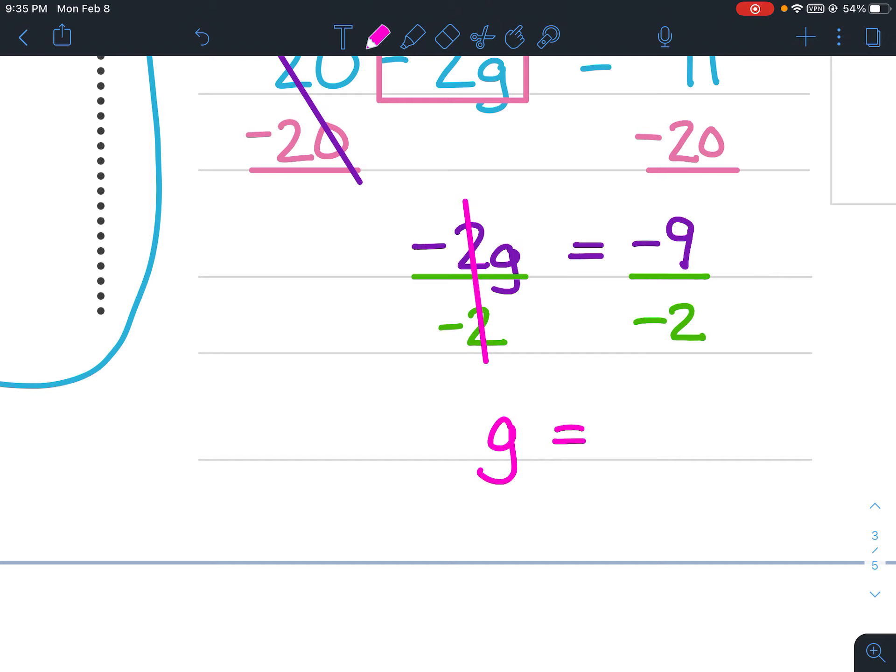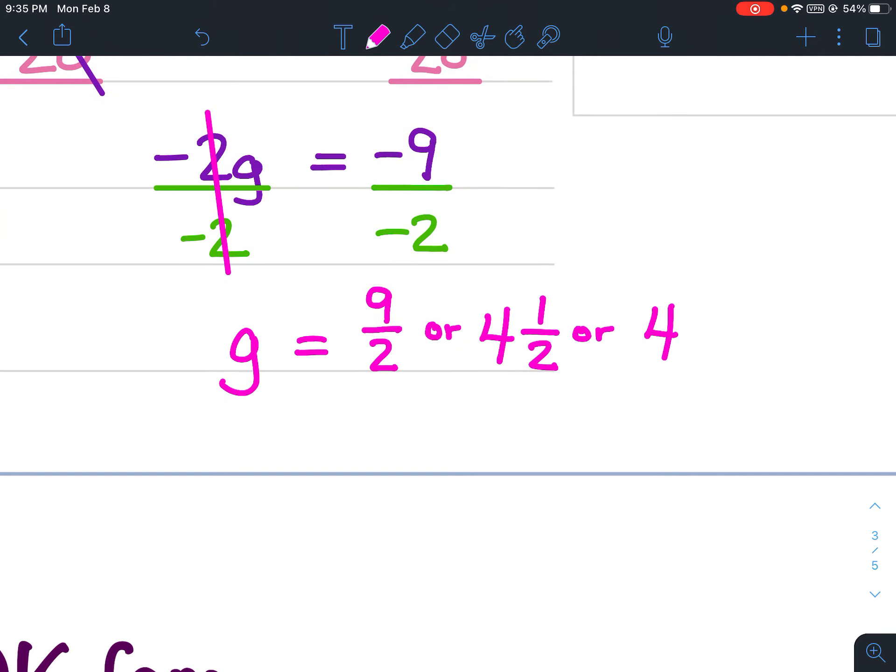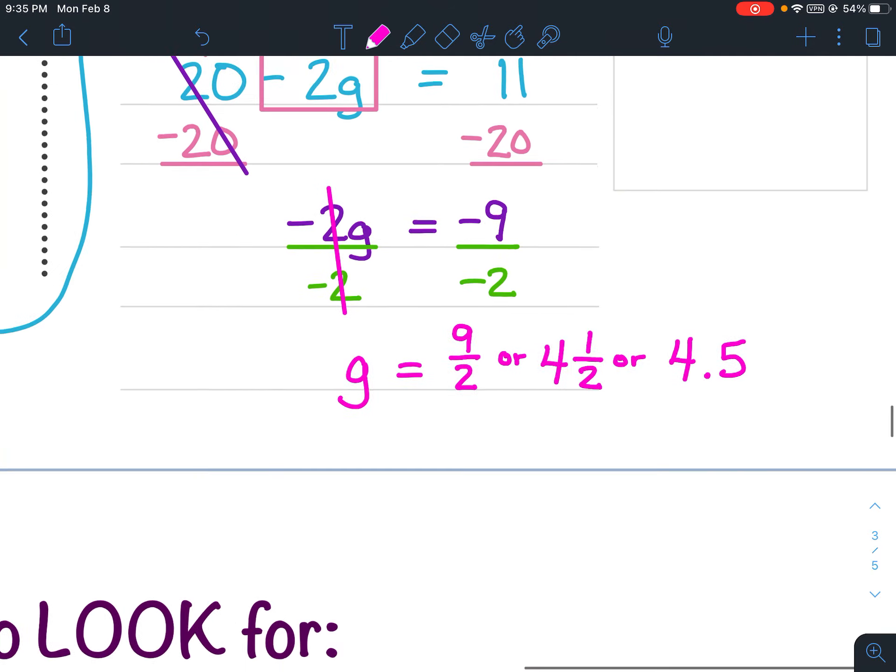Unfortunately, negative 9 divided by negative 2 does not give us an integer answer. So in other words, it's going to stay a fraction. You could either write it as 9 halves or 4 and a half or 4.5. I would accept any one of those answers.